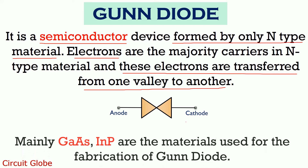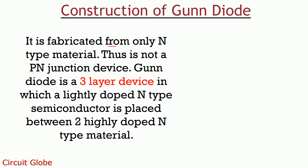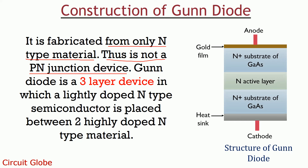Gunn diodes are formed by materials such as gallium arsenide or indium phosphide. The device is only composed of N-type semiconductor material and therefore is not a P-N junction device. The structure of a Gunn diode consists of three layers, all formed by N-type semiconductor material. The middle layer is lightly doped while the other two layers are highly doped, and this lightly doped region is known as the active layer.